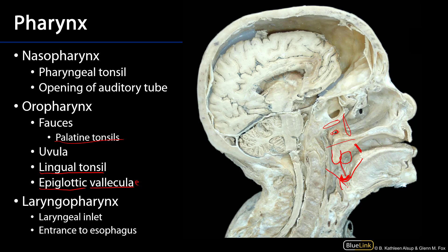Below the level of the epiglottis we have the laryngopharynx, which has the laryngeal opening because the larynx sits anteriorly to the laryngopharynx. Just below the level of the cricoid cartilage, approximately at the level of C6, is the entrance to the esophagus. It's really here in the laryngopharynx that we have the convergence of the aerodigestive pathway: anteriorly the respiratory pathway including the larynx and trachea, and posteriorly the digestive pathway including the esophagus. Thank you very much for your time.